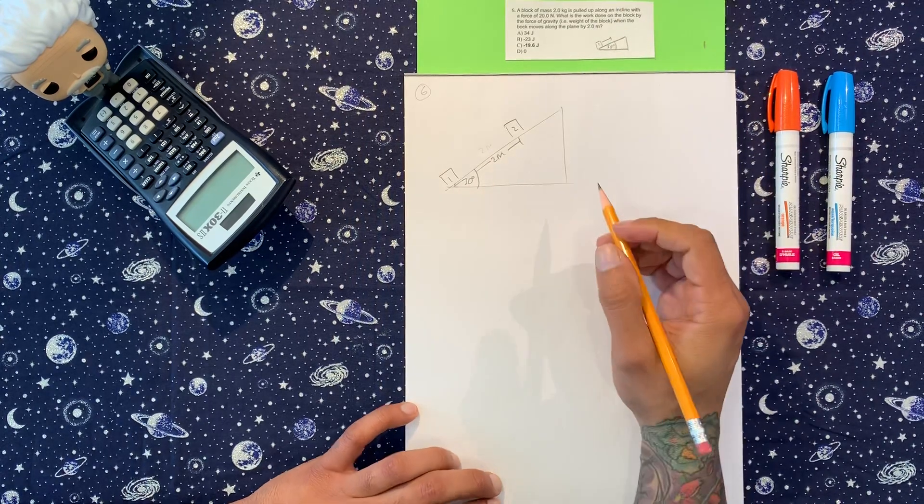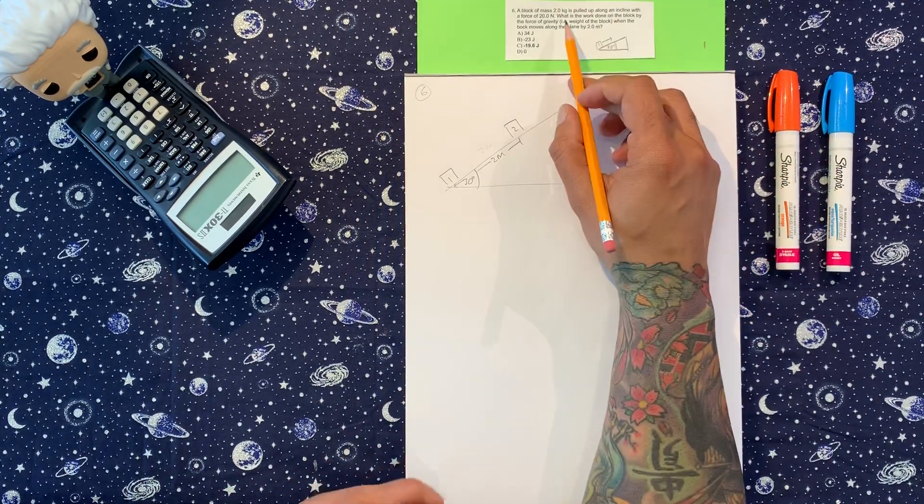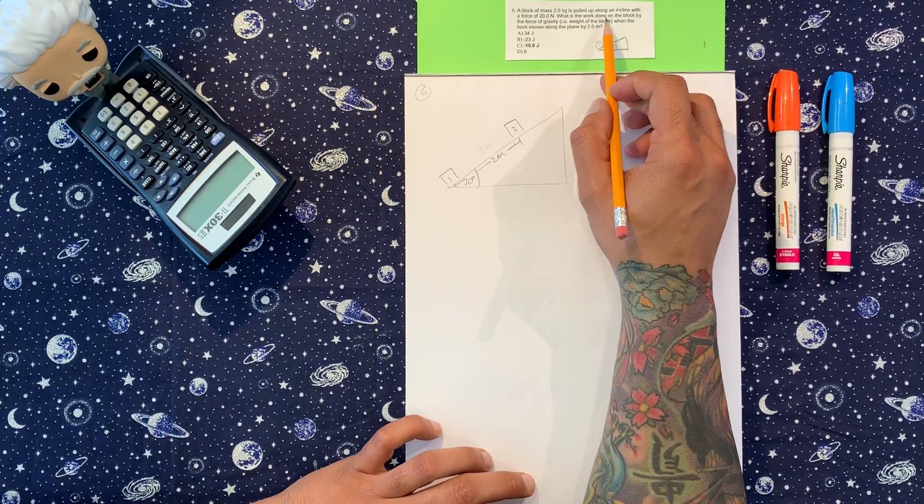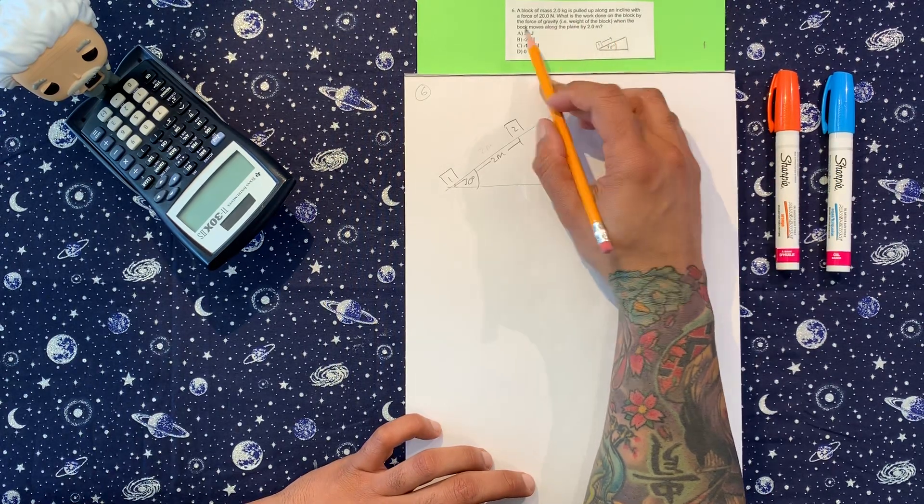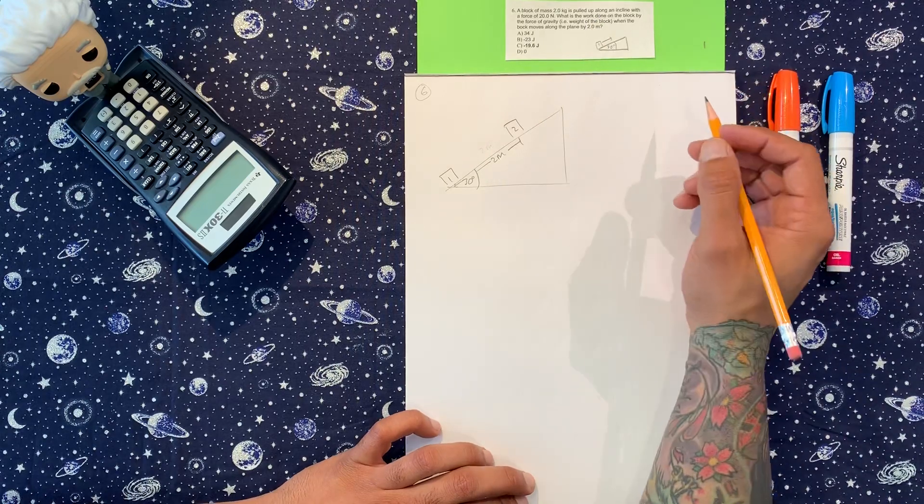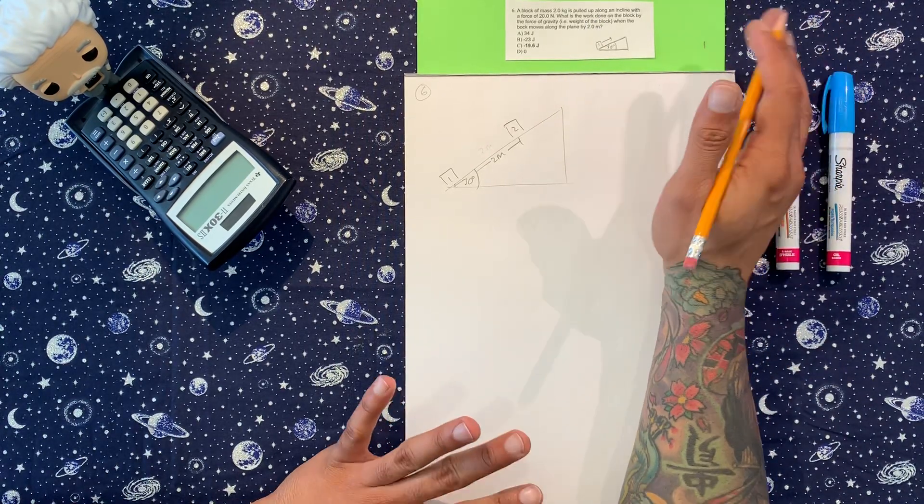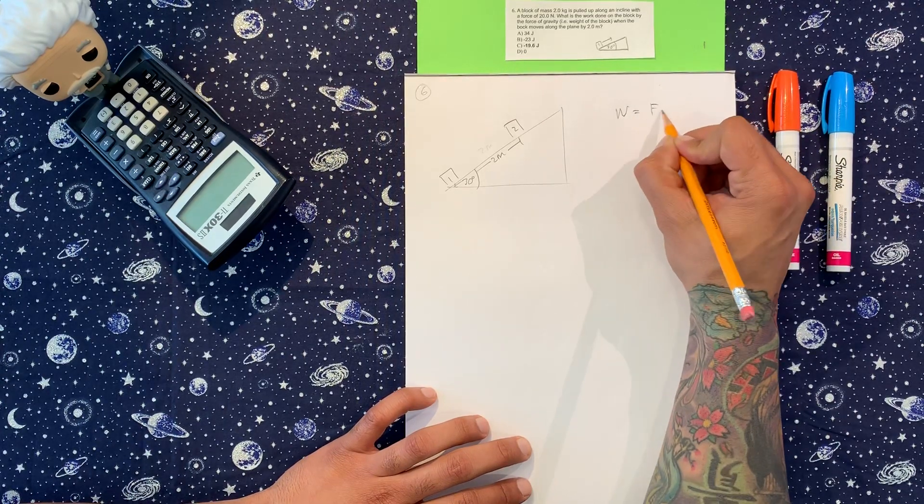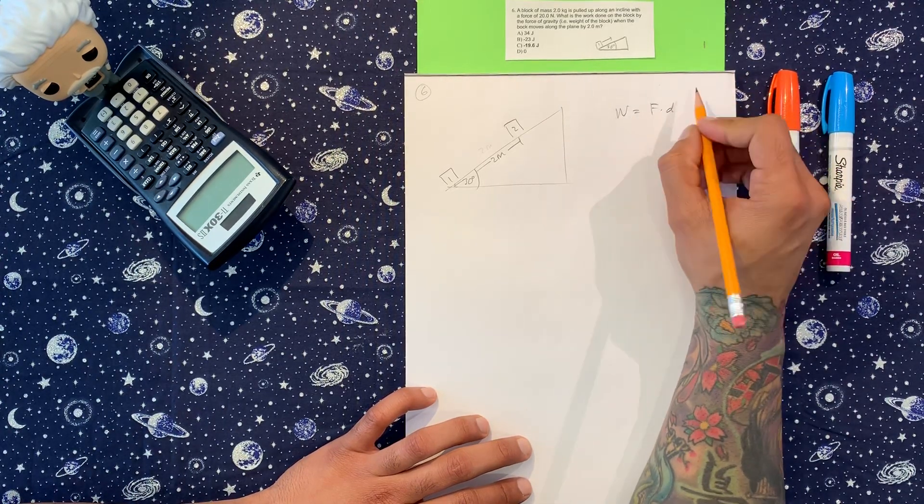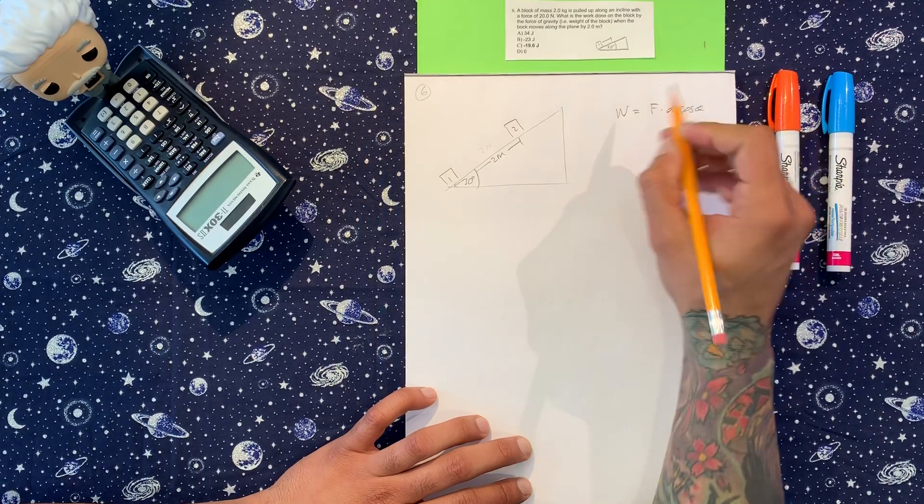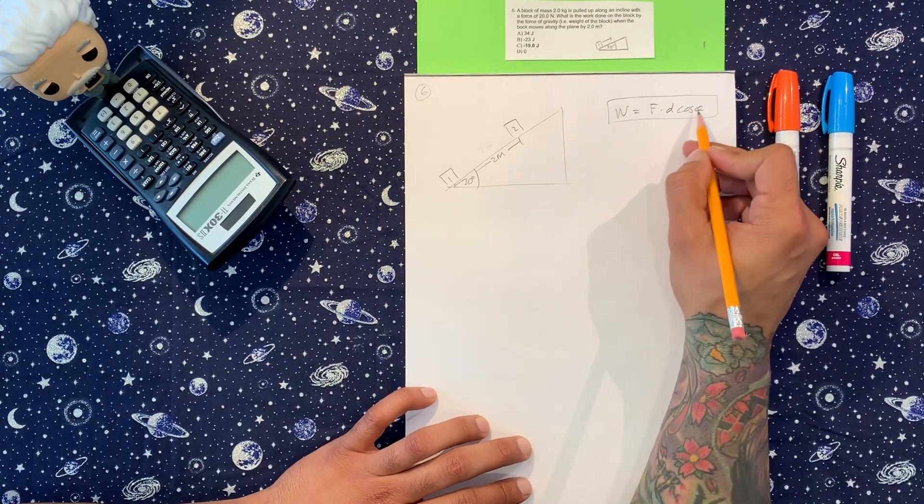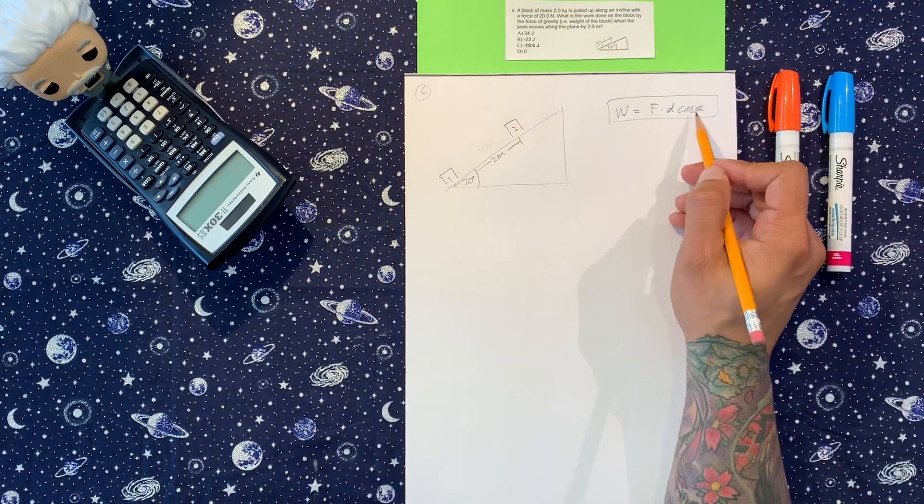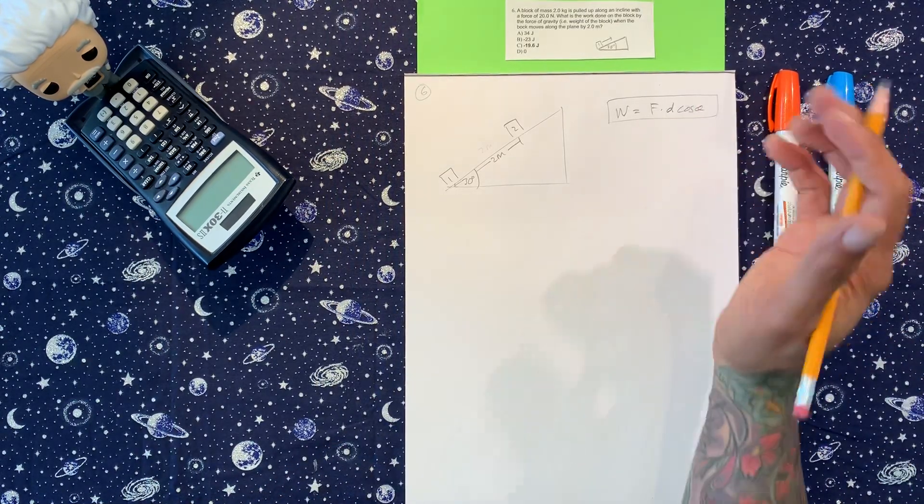Okay, and let's see what else we got. The work done by the block. So what is the work done on the block by the force of gravity? So let's take this one thing at a time. So work, right, is going to be f dotted with d times cosine theta. It's important that you write the cosine theta and know the angle between these two because it could make this negative or positive. So I'll show you what I mean.